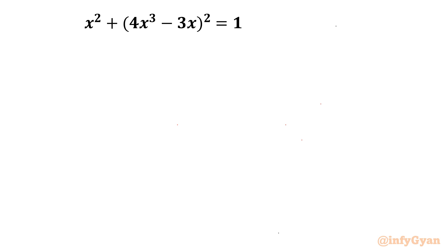Welcome back to Infigyan, my dear friends. Today in this video we are having one hexic equation challenge from Mathematical Olympiad. The equation is x² + (4x³ - 3x)² = 1. I will solve this question in two different ways: first using algebra and second using trigonometry.